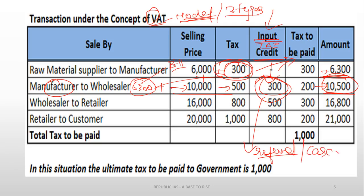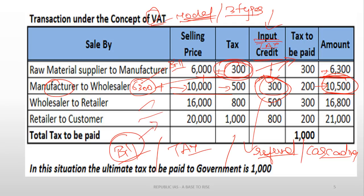By this mechanism, the cascading effect — tax on tax — is mitigated. Tax evasion is also controlled. In the previous system, a seller could supply without a bill and the supply chain would still work. But in the VAT model, every player in the supply chain wants to buy with a bill because they can get back the taxation amount from the government. If anyone sells without a bill, the buyer faces a loss. So both tax evasion and price rise due to cascading effect are controlled.